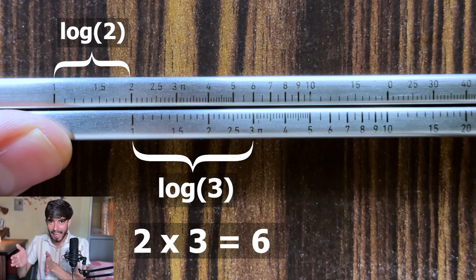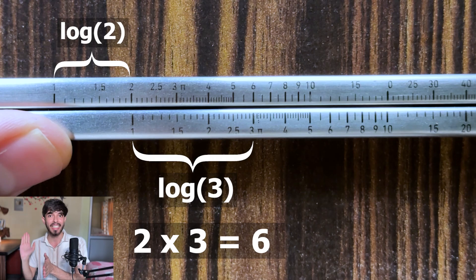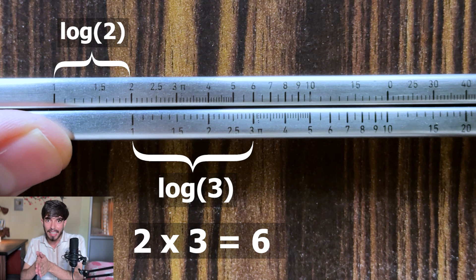See we are adding lengths and addition in logarithm is equivalent to multiplication. So that is how these slide rules can help us multiply numbers using addition of lengths.